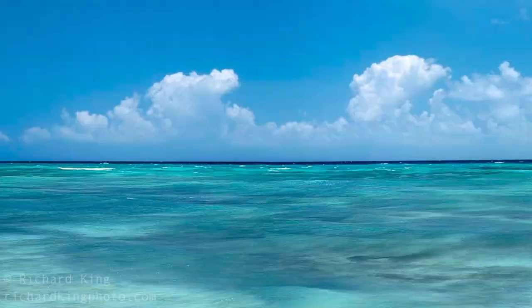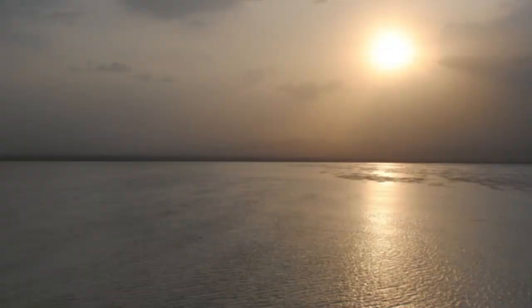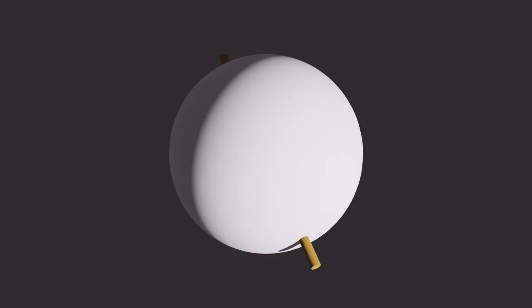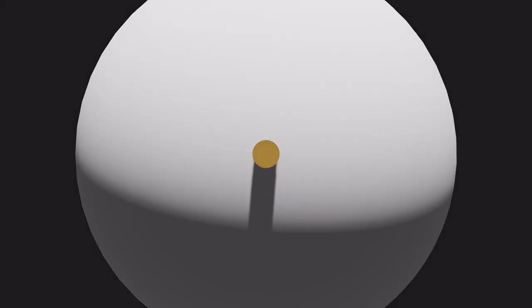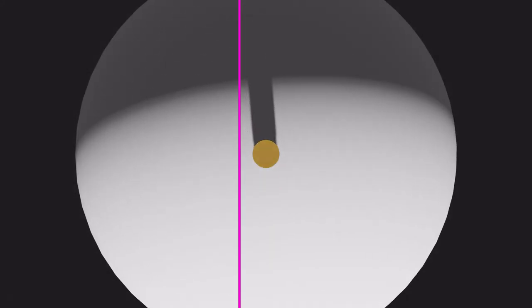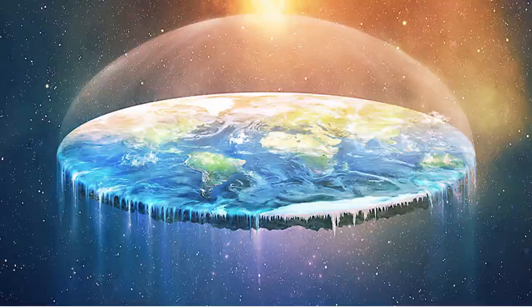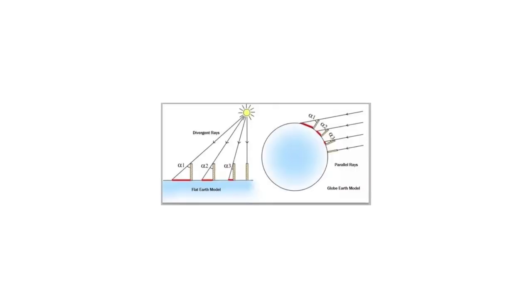One of the main differences of what we would see on a flat earth versus a globe earth is shadows. On a globe earth, you would see an almost straight line formed by shadows going west to east. Now before we can figure out shadows on a flat earth, it's important to understand what flat earthers believe.